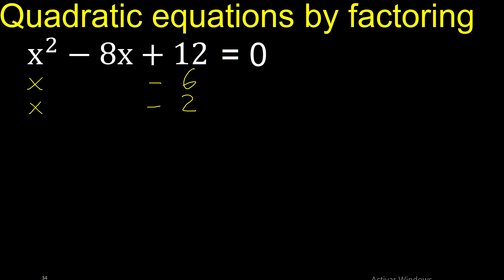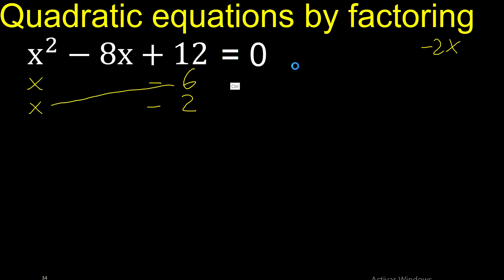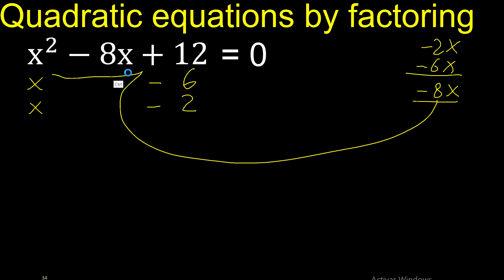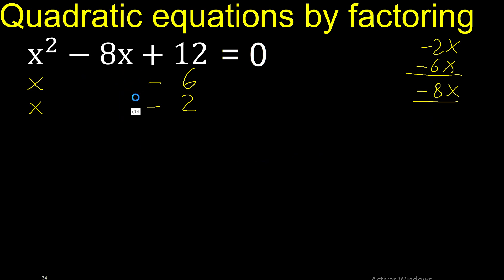Let's analyze if it is correct. x multiplied by minus 2 here, x multiplied by minus 6 here. Minus 2 minus 6 is minus 8. Equal — therefore it is correct.